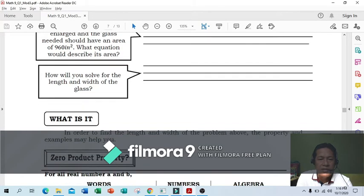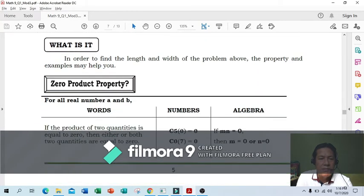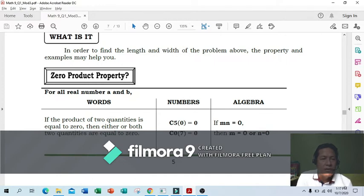Practice. Next: Zero Product Property. For all real numbers a and b, if the product of two quantities equals zero, then either or both quantities equal zero. 5 times 0 equals 0, 0 times 7 equals 0. If m times n equals 0, then m equals 0 or n equals 0.